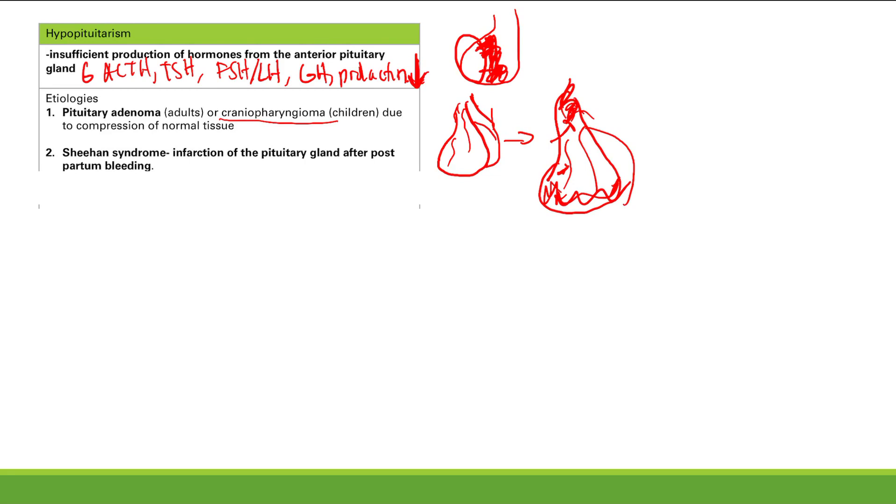Because what happens after you deliver a baby? What do you need to do for the baby? You need to feed them. You need to lactate. And so what was the hormone here? Prolactin. So if you have decreased prolactin, what's going to happen? You're not going to be able to lactate.